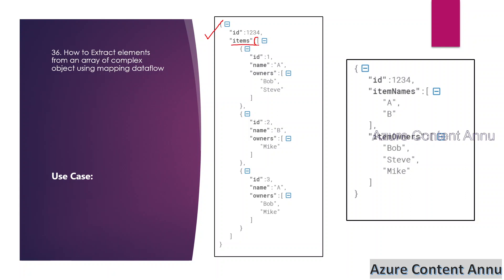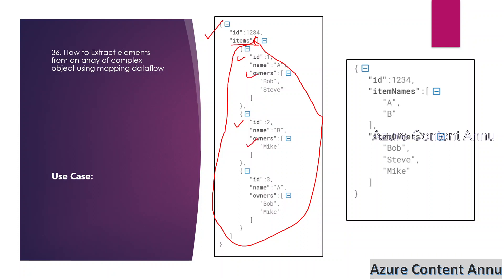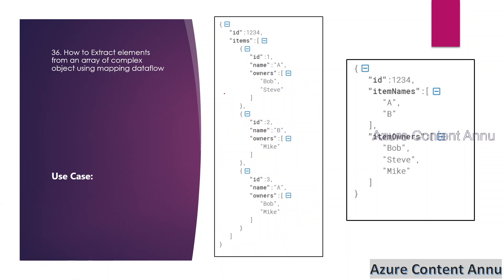We have a JSON which has an array called 'items'. This array is an array of complex objects, meaning it contains multiple JSONs inside it, and inside those JSONs we have another array as well. It has mainly three JSONs — this is one, this is another one, and this is another one.